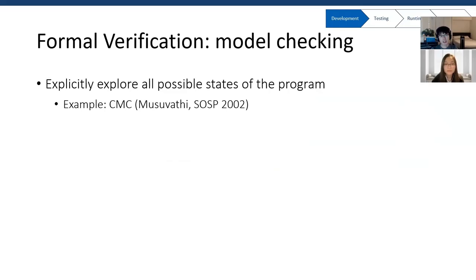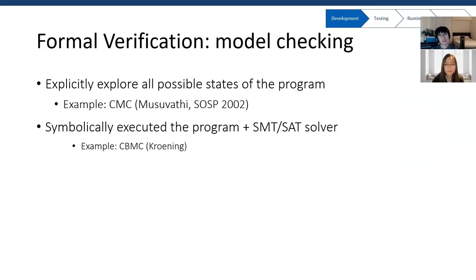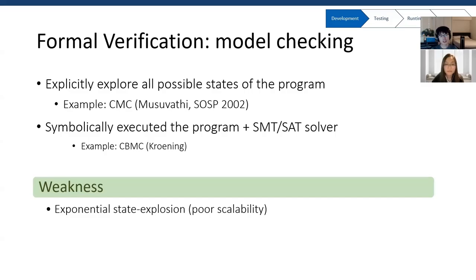There are two ways to do model checking. The first way is to explicitly visit every possible state — we actually run the program and build a state graph on the fly. An example is CMC, which checks correctness of C programs using this method. Another way is symbolic model checking: such model checkers represent the program's behavior under different inputs with symbols, and the correctness of the program is represented with a boolean expression with respect to those symbols. We then send the expression to a solver to see whether it is satisfiable. An example is CBMC, which checks C or C++ programs this way. The issue is that the complexity of visiting all states grows exponentially with the size of the program, making it hard to model check large and complex systems.